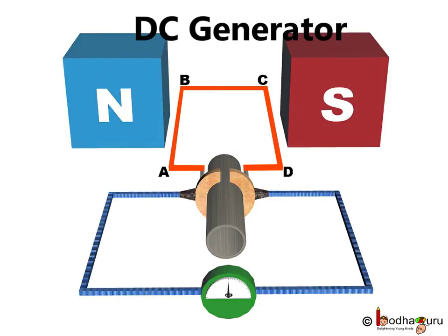Thus, our DC generator consists of a simple rectangular coil ABCD which is made of insulated copper wire, and the coil is placed between the two poles of a powerful magnet. Also, the arms AB and CD of the coil are perpendicular to the direction of magnetic field.